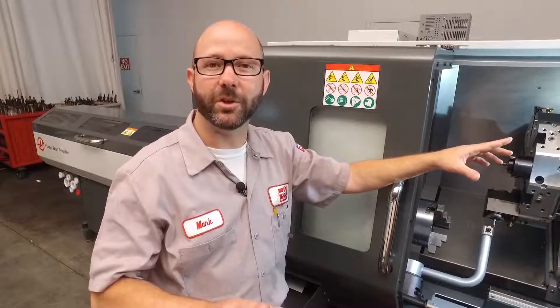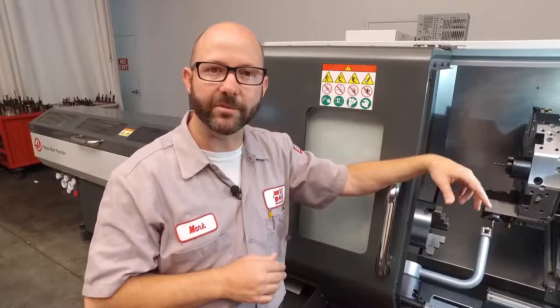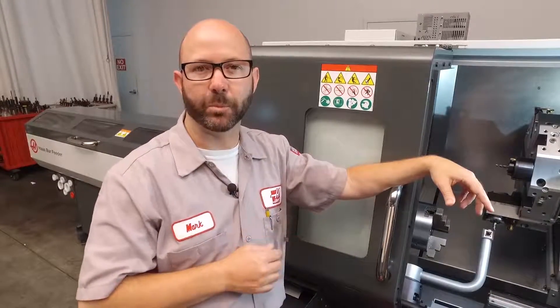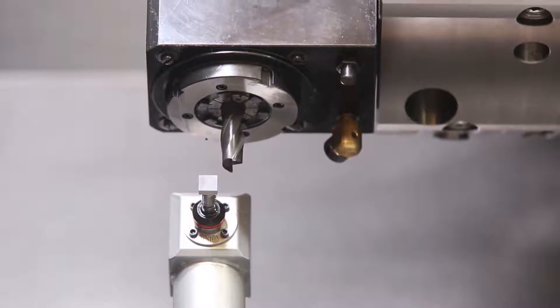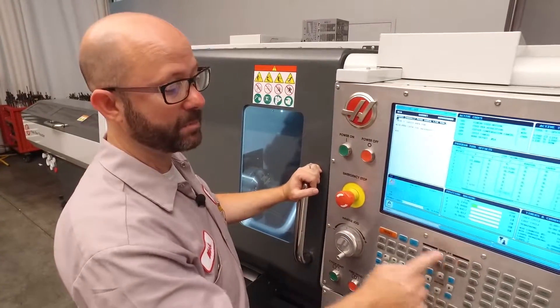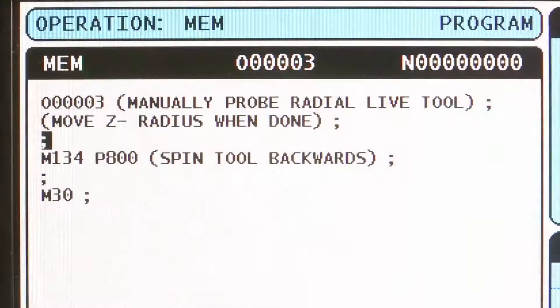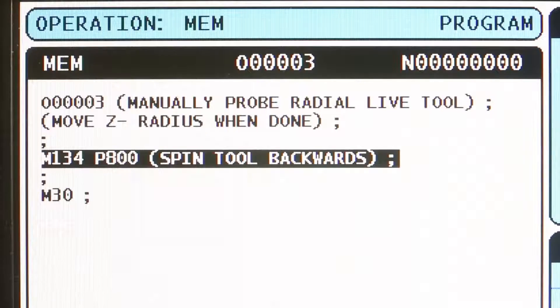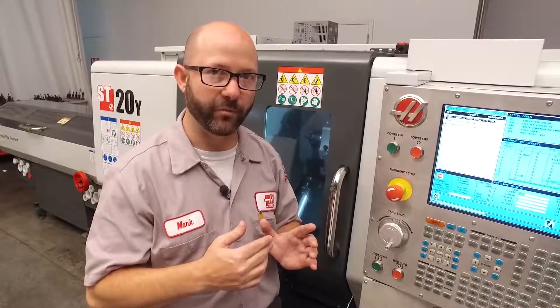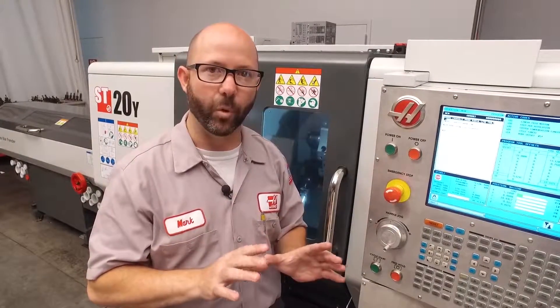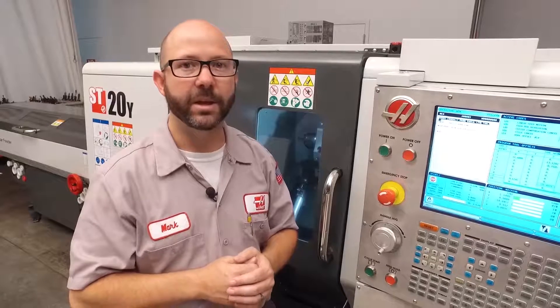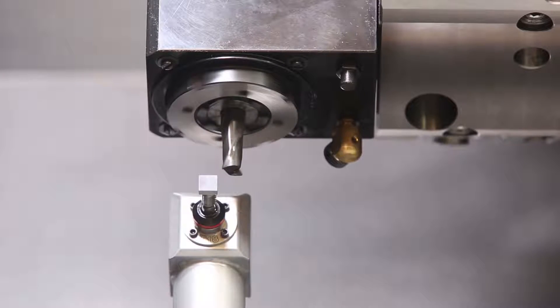Now this final tip is for those of you that would like to touch off your radial live tooling using your ATP arm, your automatic tool preset. And we can do this. Now I've already brought my arm down and I've jogged my end mill just above and to the right of my probe tip. Now I've created a program in memory. And it's really got just one real line of code. M134 P800. This is going to start my live tooling with an M134 at 800 RPMs. P800.